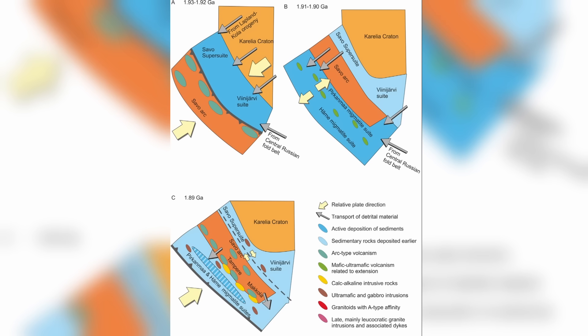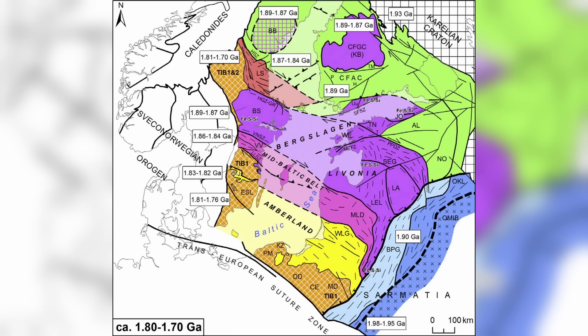During this orogeny, we saw several different volcanic arcs and microcontinents collide with the Karelian Craton and then be accreted onto it. This greatly expanded the continental crust off of the Karelian Craton, and also greatly thickened the crust to around 65 kilometers. For context, the average continental crust is around 35 to 40 kilometers.